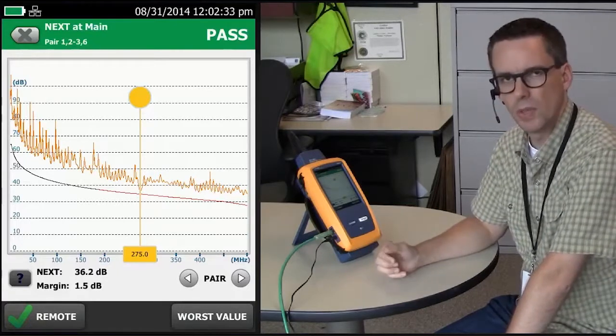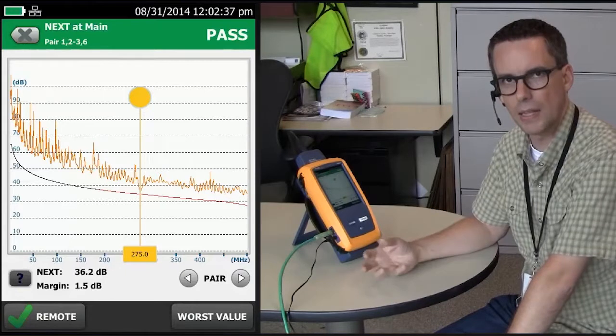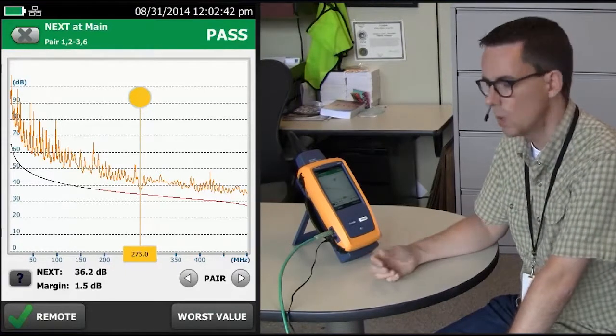What is the 4 dB rule? If the insertion loss of the pair is less than 4 dB, then that near-end crosstalk measurement is ignored.